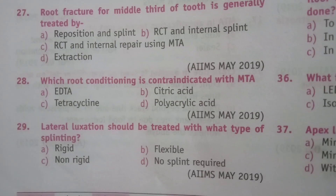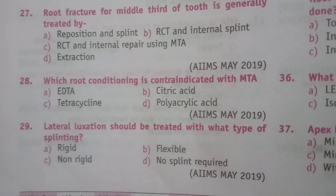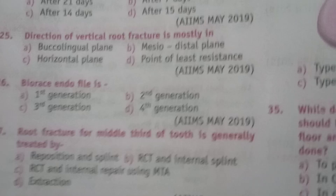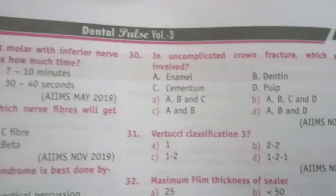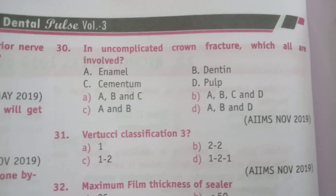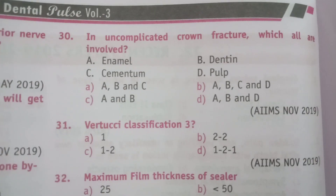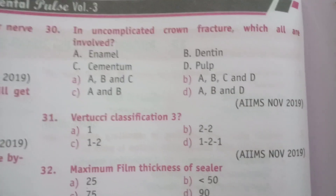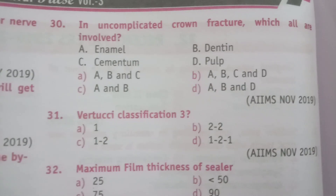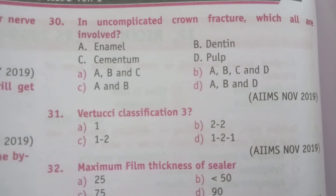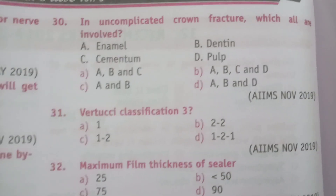Next question: in uncomplicated crown fracture, which structures are involved? In uncomplicated crown fracture, enamel and dentin are involved. The answer is C.